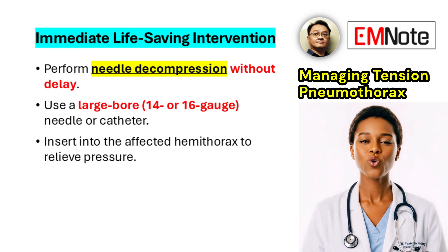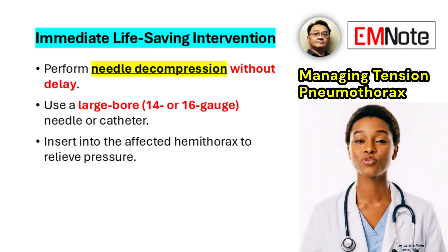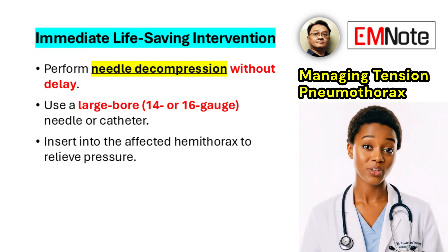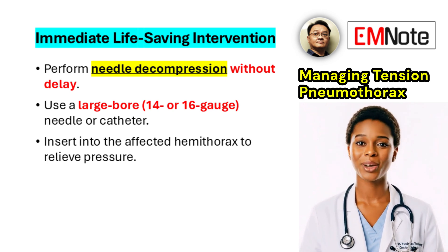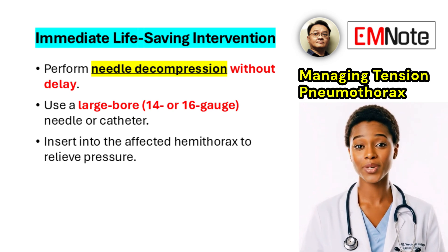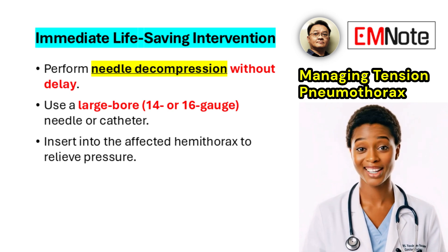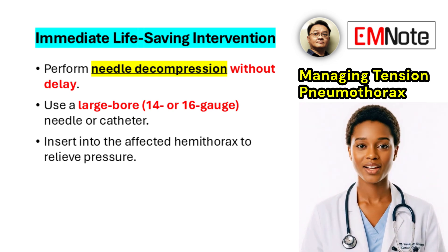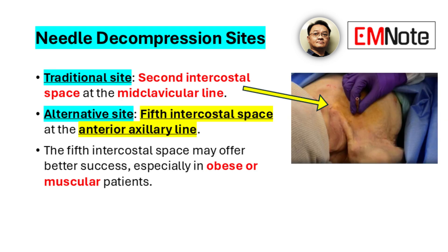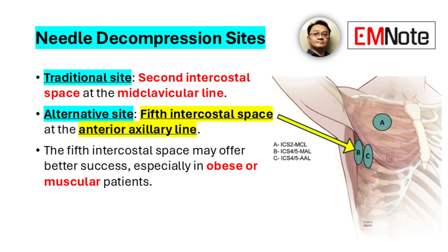A large-bore needle or catheter, typically a 14-gauge or 16-gauge, must be inserted into the affected hemithorax. The traditional site for insertion is the second intercostal space at the midclavicular line.